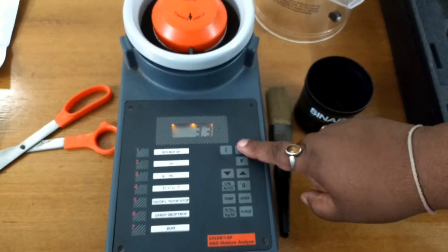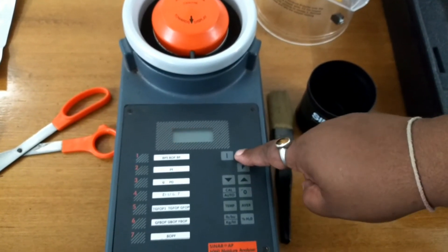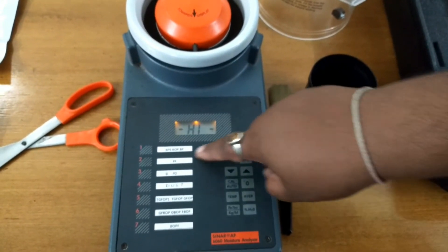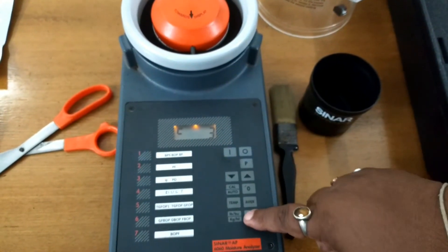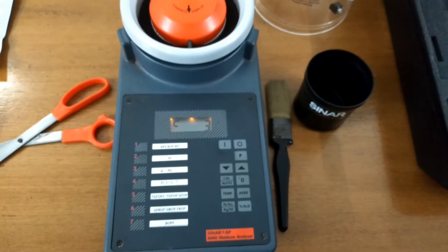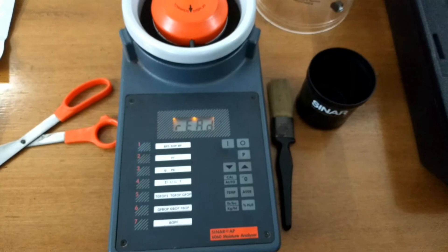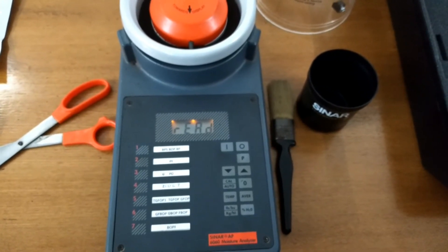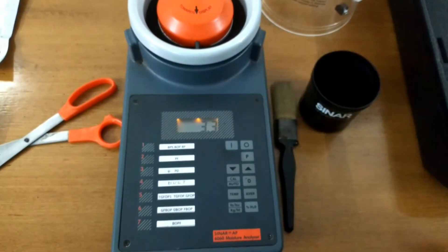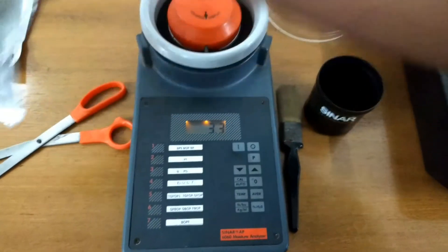Now, after this, switch off the machine, switch it on, then see channel number 3 once again. The machine is showing 3.3, which is within the sample specification.